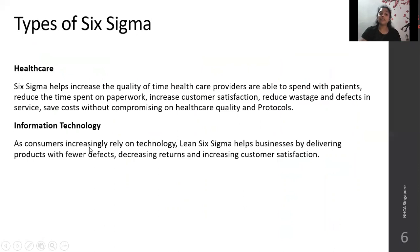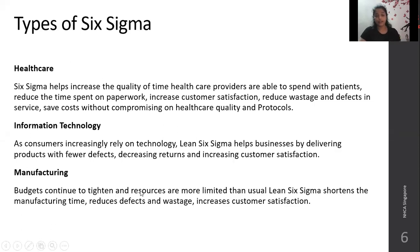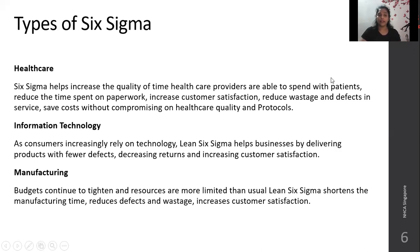Information Technology: as consumers increasingly rely on technology, Lean Six Sigma helps businesses by delivering products with fewer defects, decreasing returns, and increasing customer satisfaction. Manufacturing: budgets continue to tighten and resources are more limited than usual. Lean Six Sigma shortens manufacturing time, reduces defects and wastage, and increases customer satisfaction. This is how Six Sigma applies to healthcare, information technology, and manufacturing.